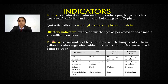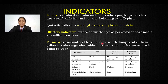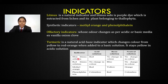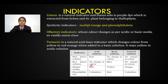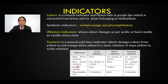Turmeric is a yellow color natural acid-base indicator. It changes its color from yellow to red-orange when added to a basic solution, and stays yellow in acidic solution. For indicator color changes: blue litmus becomes red in acid and remains blue in base. Red litmus shows no change in acid and becomes blue in base. Methyl orange, which is orange, becomes red in acid and yellow in base. Phenolphthalein, which is colorless, remains colorless in acid and becomes red in base.